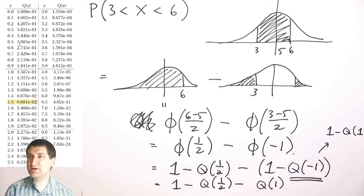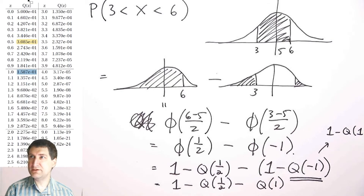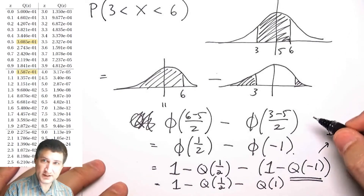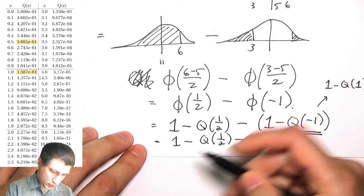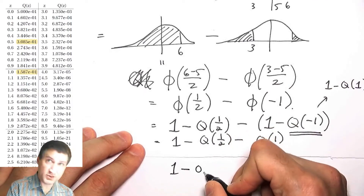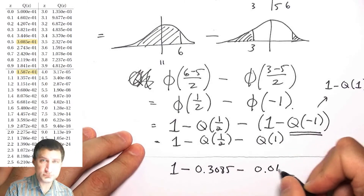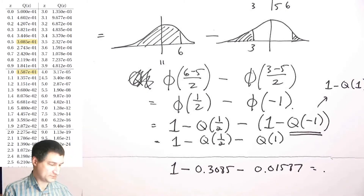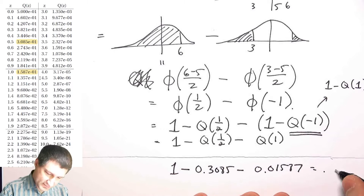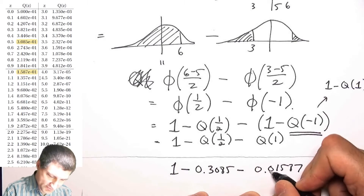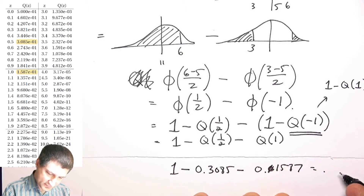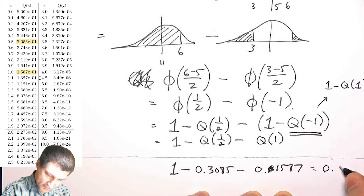Simplifying, the expression becomes one minus Q of one-half minus Q of one. From the table, Q of one-half is about 0.3085 and Q of one is about 0.1587. So the answer is one minus 0.3085 minus 0.1587, which is approximately 0.532, or about 55%.